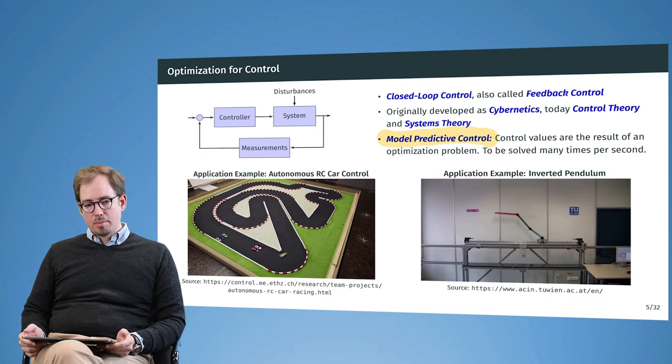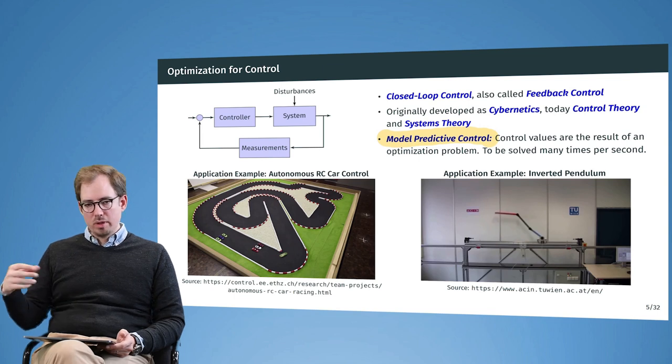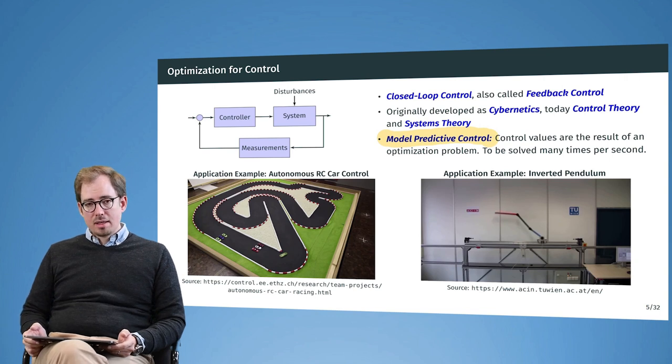So far we have seen problems that were more or less static. We look at our problem, we cast it in an optimization problem, we solve that, we apply that, and then it holds forever, so to speak. But there are also domains where we have to be really fast in taking decisions. One of the domains where we need to be really fast is in control.